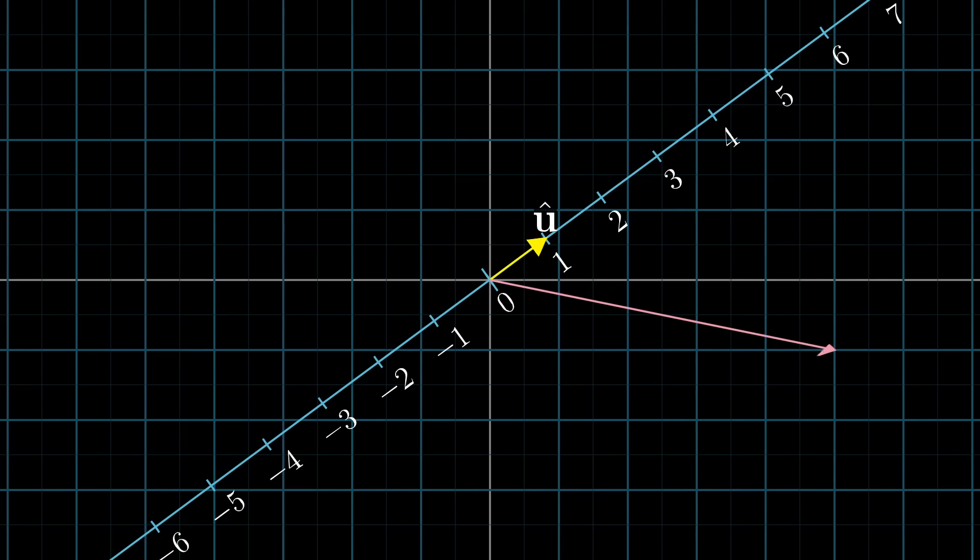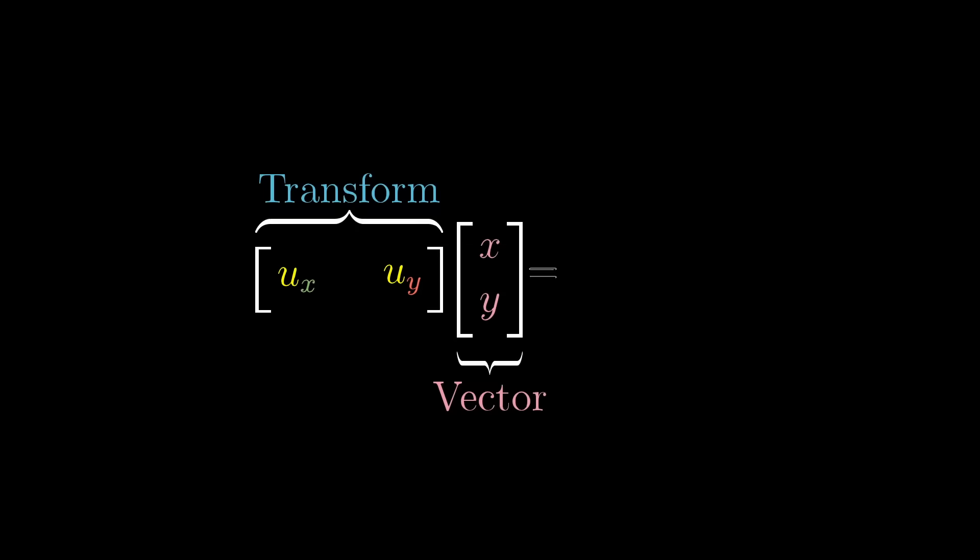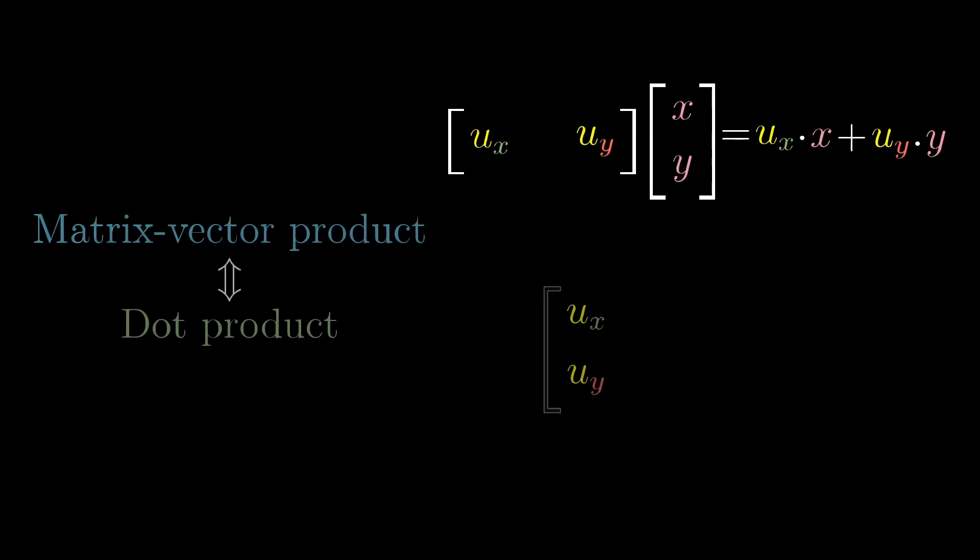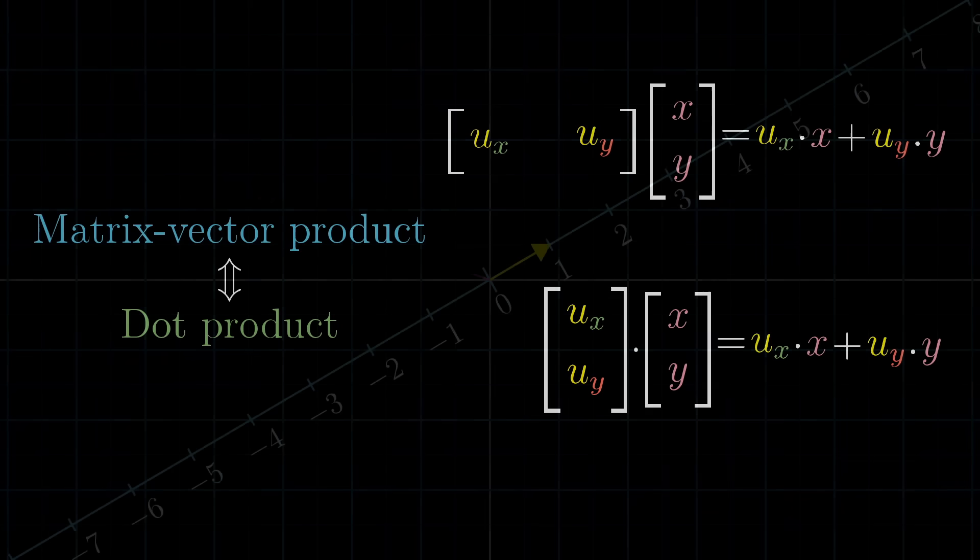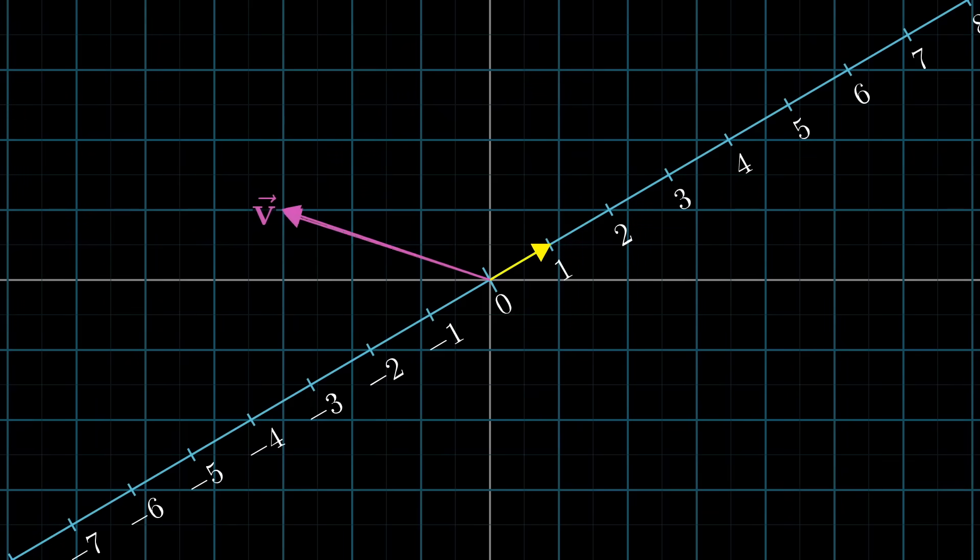And computing this projection transformation for arbitrary vectors in space, which requires multiplying that matrix by those vectors, is computationally identical to taking a dot product with u-hat. This is why taking the dot product with a unit vector can be interpreted as projecting a vector onto the span of that unit vector and taking the length.